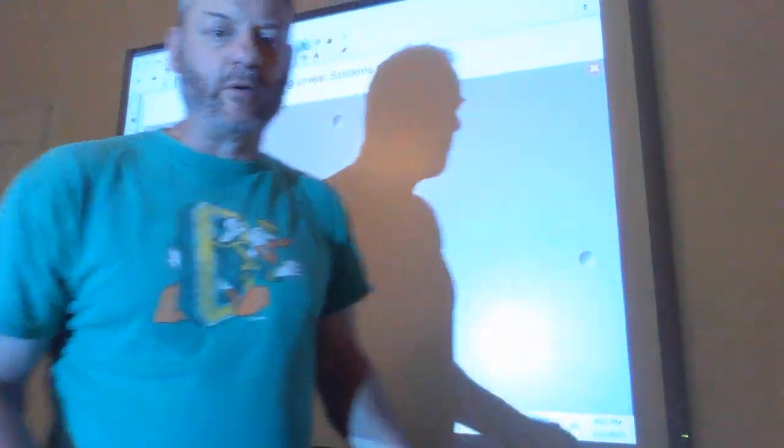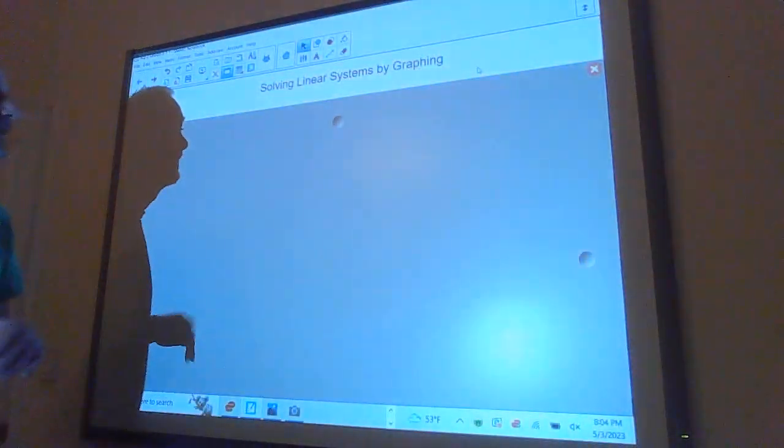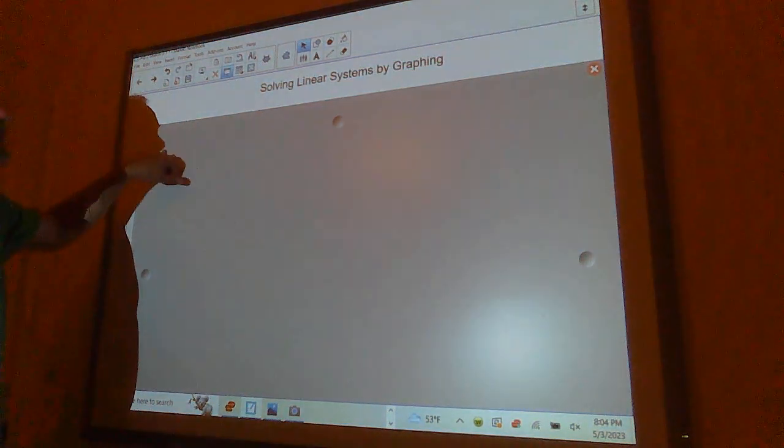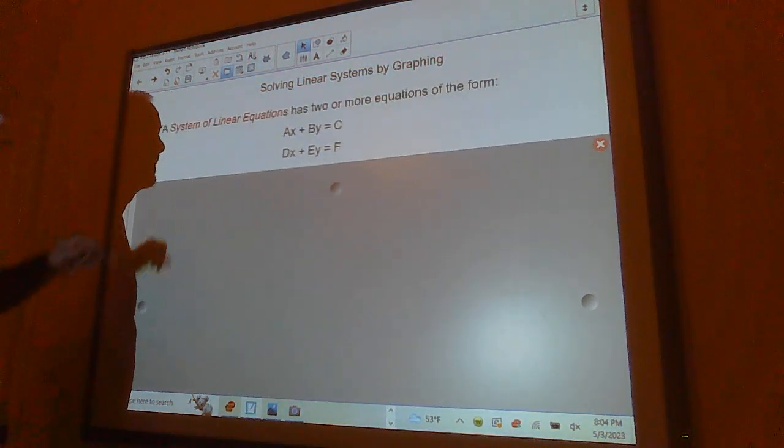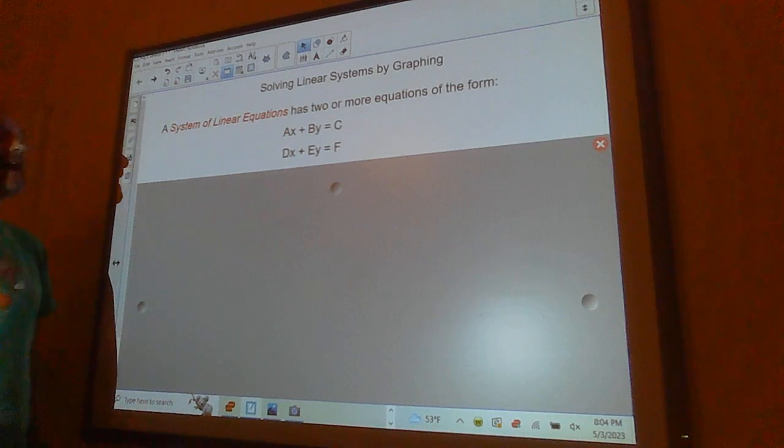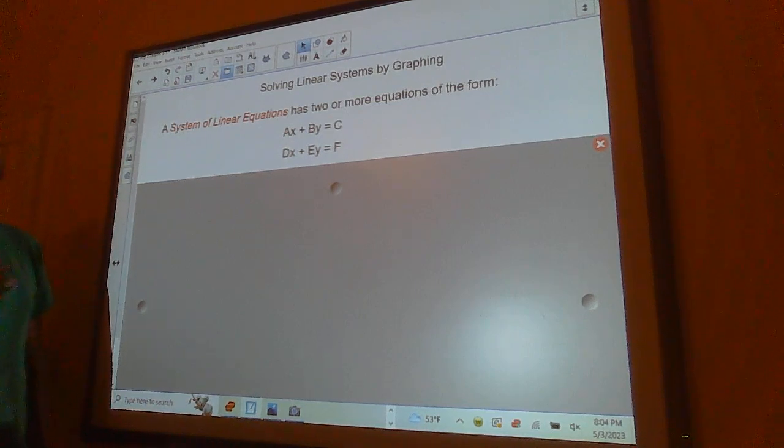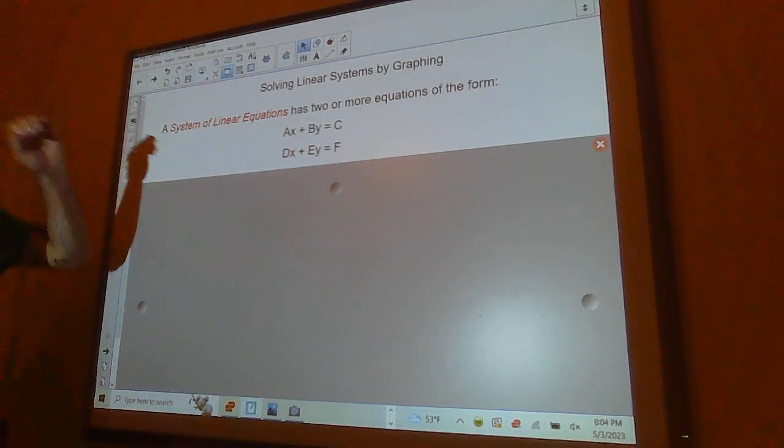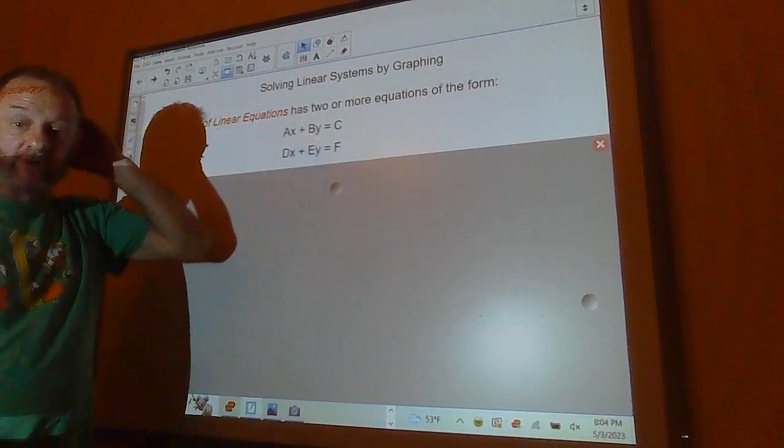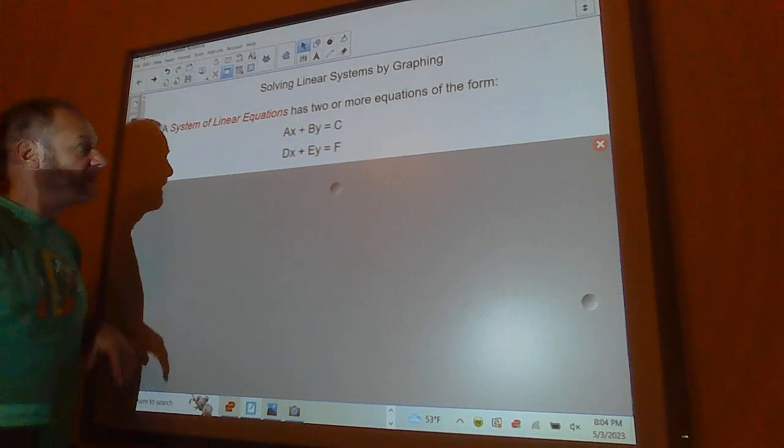Hello everybody. Today we are going to review solving linear systems by graphing. So remember, a linear system has two or more equations of the form AX plus BY equals C and BX plus EY equals F. This is standard form for the equation of a line, easy to graph.